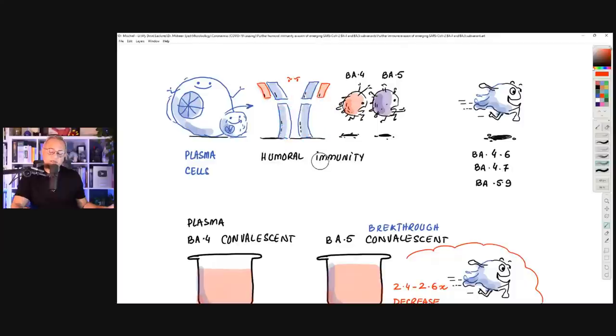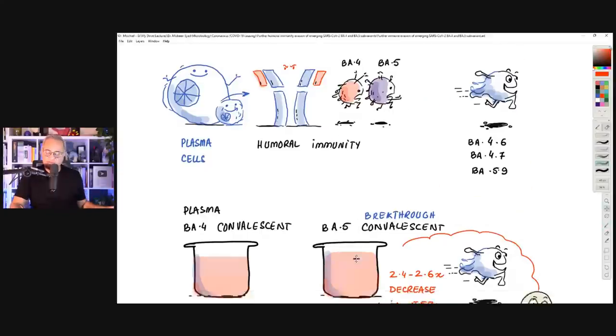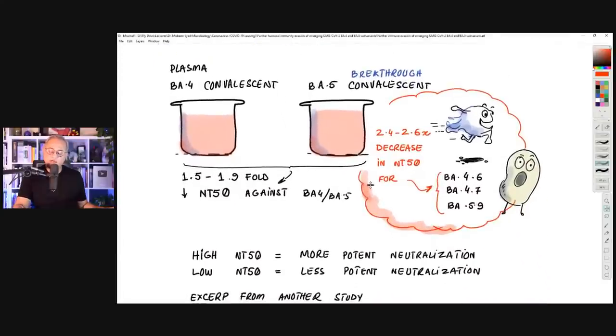Here the researchers are saying that the humoral immunity, that is the antibodies-based immunity, has become significantly escaped by BA.4.6 subvariants. BA.4 itself and BA.5 themselves are still being picked up by the immunity, by vaccine or by the infection. But these guys, BA.4.6, 4.7 and 5.9, they have escaped.